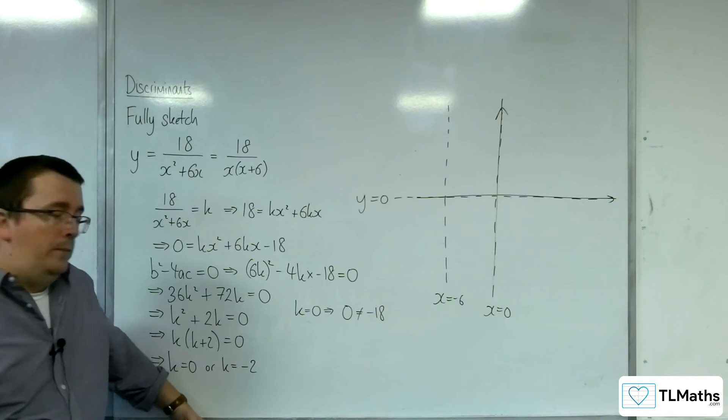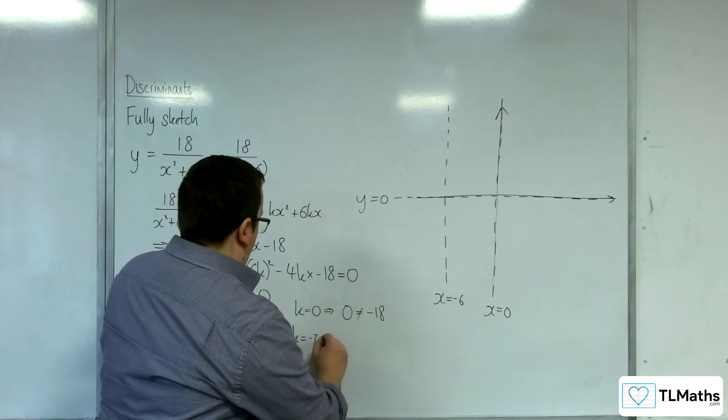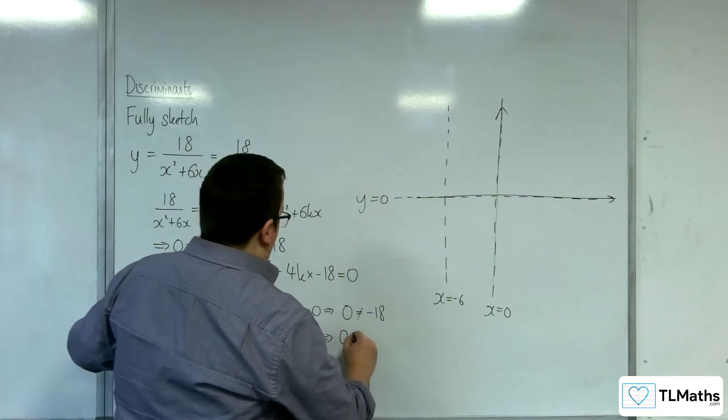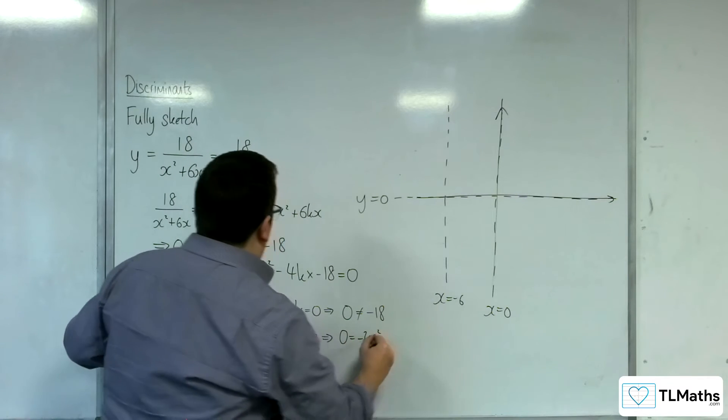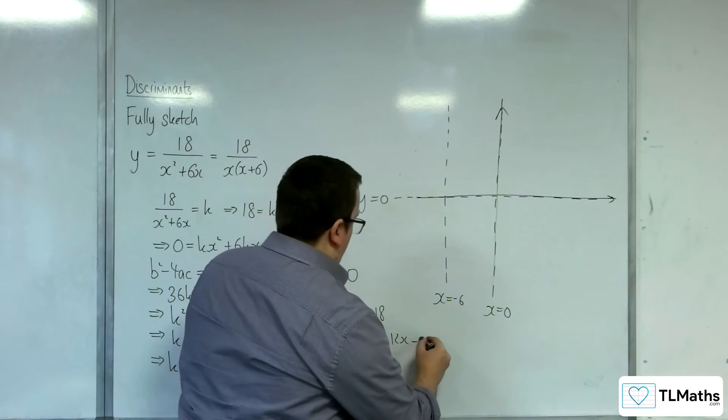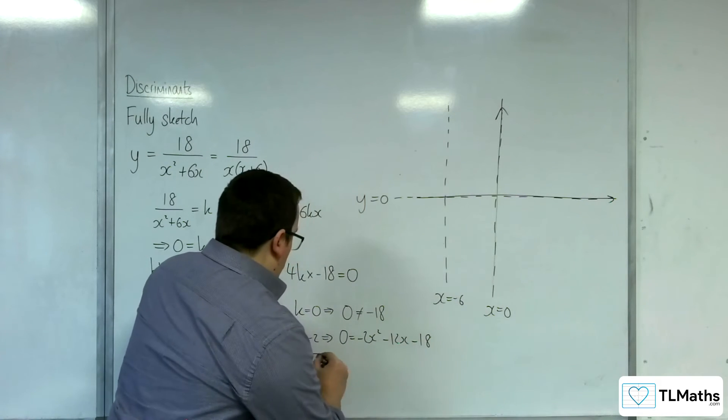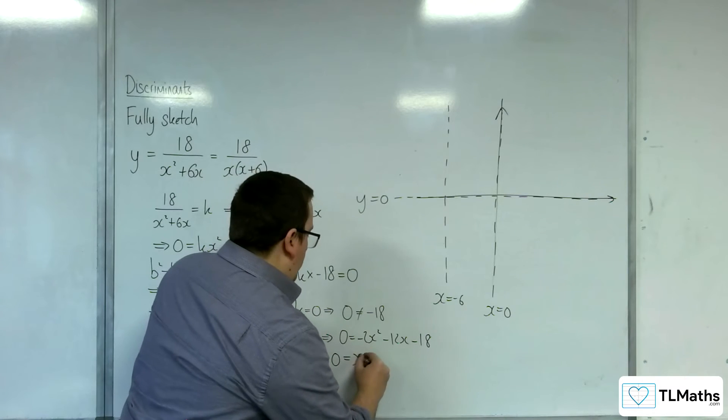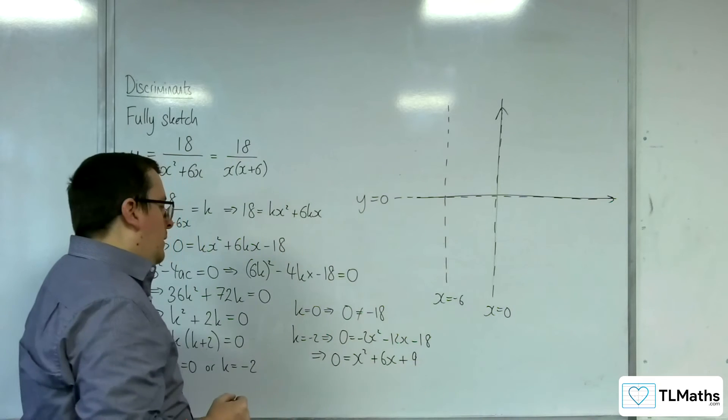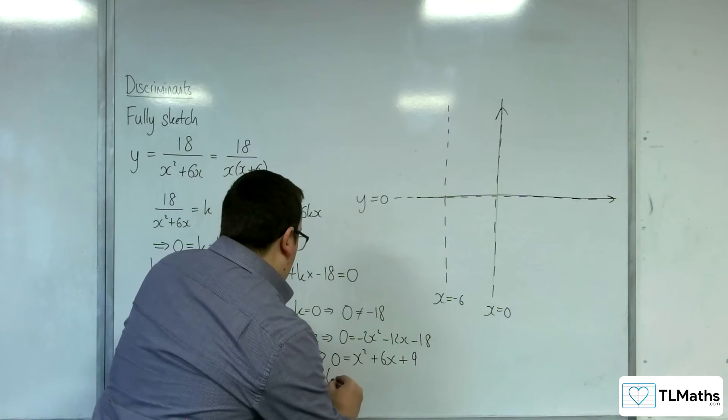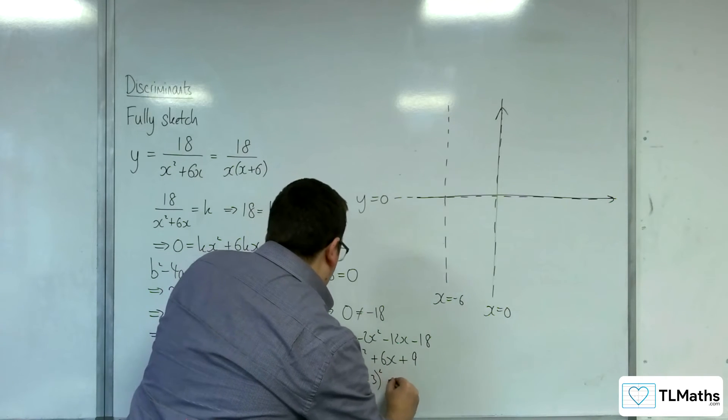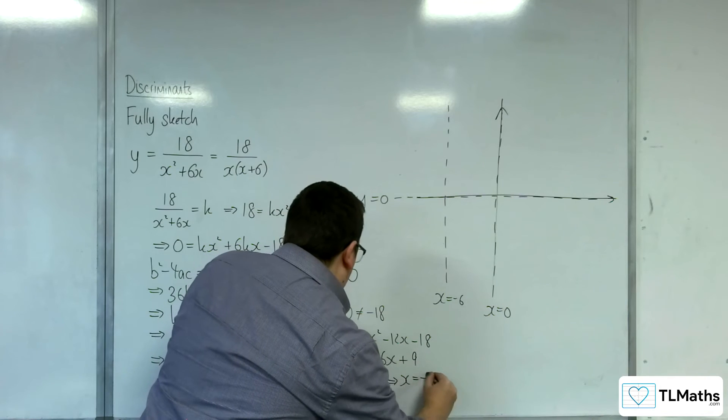So how about k equals minus 2? So k equals minus 2 is going to give me 0 is equal to minus 2x-squared, take away 12x, take away 18. So I'm going to divide through by minus 2, and we get 0 is equal to x-squared plus 6x plus 9, which is x plus 3 squared, isn't it? So x is negative 3.